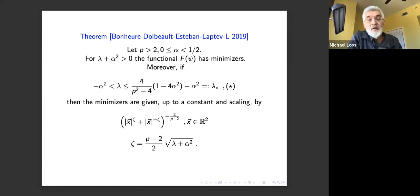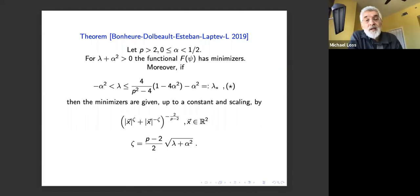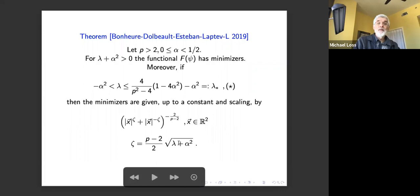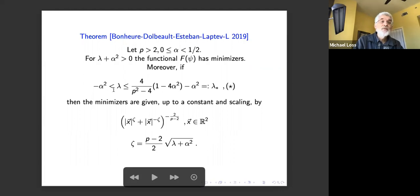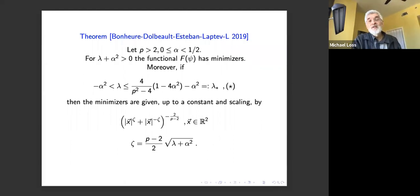This function vanishes at infinity and also at the origin in a specific fashion, consistent with the magnetic Hardy inequality. We always assume α strictly less than 1/2 because when α = 1/2 a strict inequality needed is violated. So this is the symmetry result for λ ≤ λ*.